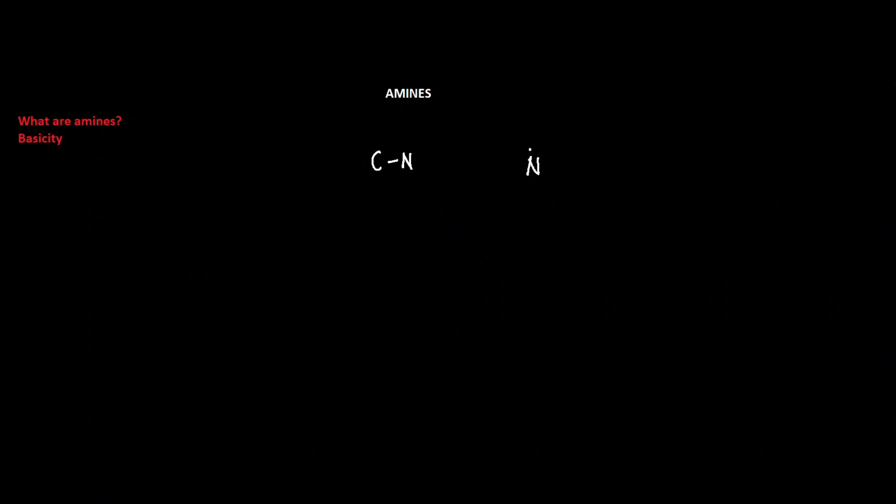which could be carbon or hydrogen. So let's take an example where we have carbon on one hand of the nitrogen and hydrogen attached on the other sides. We have something like this. Now this amine being a one carbon amine